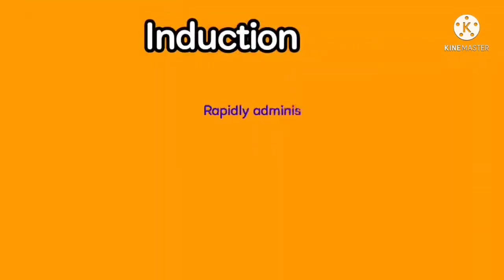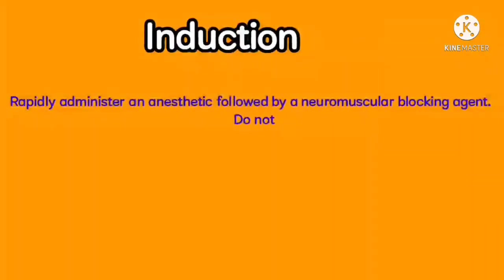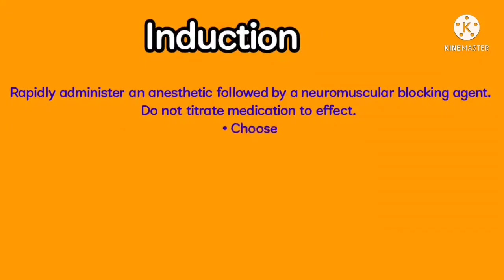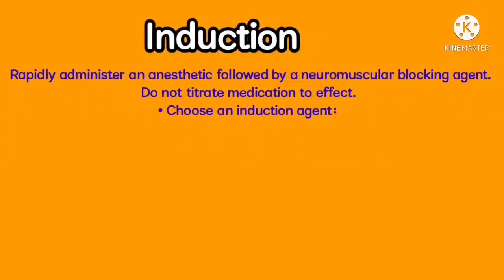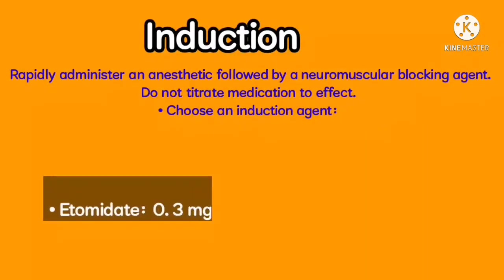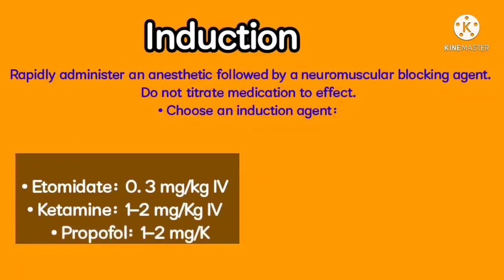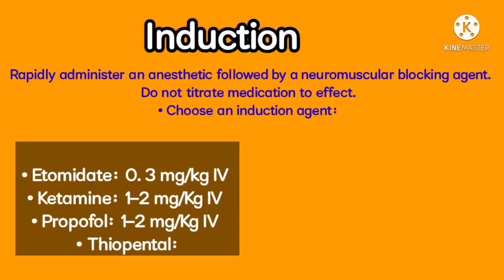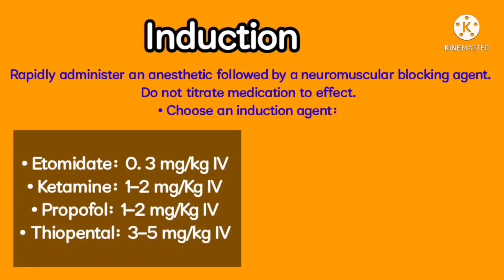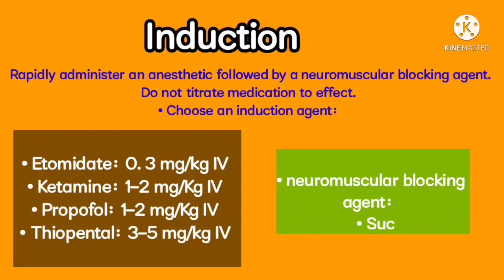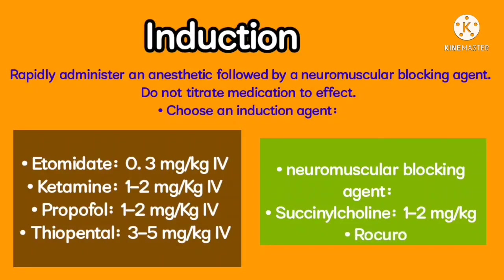Induction: Rapidly administer an anesthetic followed by a neuromuscular blocking agent. Do not titrate medication to effect. Choose an induction agent — Etomidate: 0.3 mg/kg IV; Ketamine: 1–2 mg/kg IV; Propofol: 1–2 mg/kg IV; Thiopental: 3–5 mg/kg IV. Choose a neuromuscular blocking agent — Succinylcholine: 1–2 mg/kg; Rocuronium: 1–1.2 mg/kg.